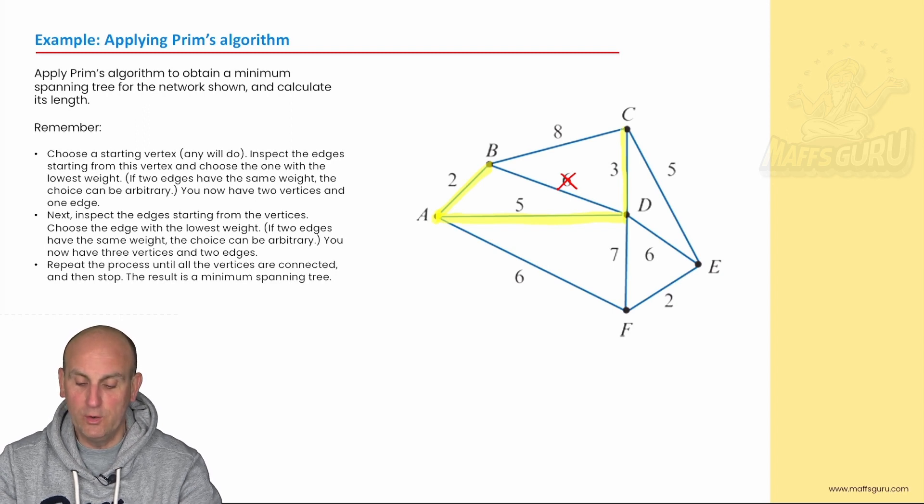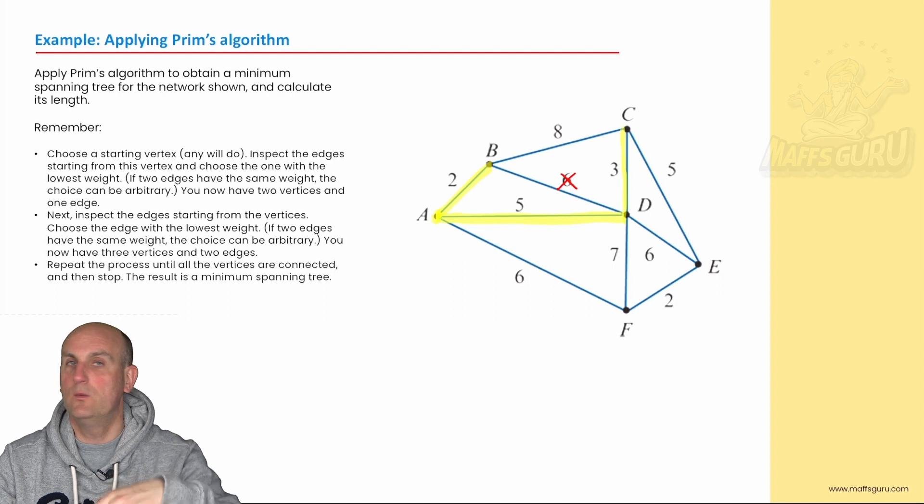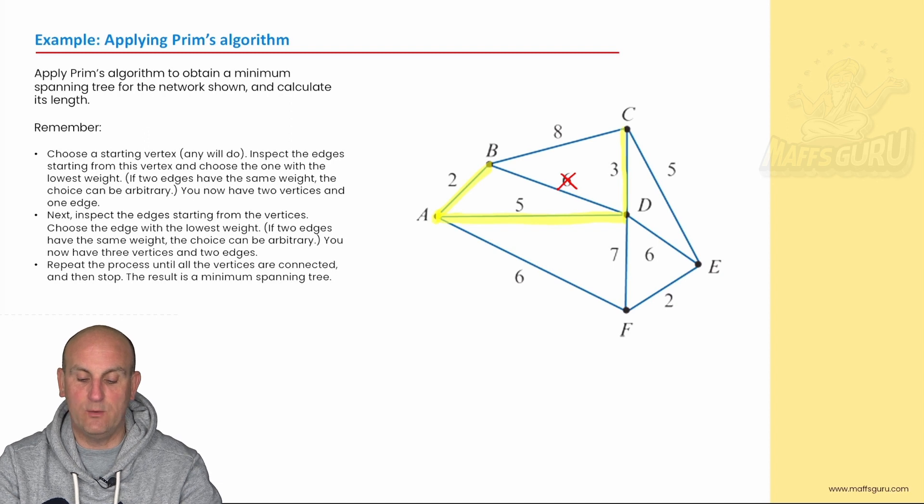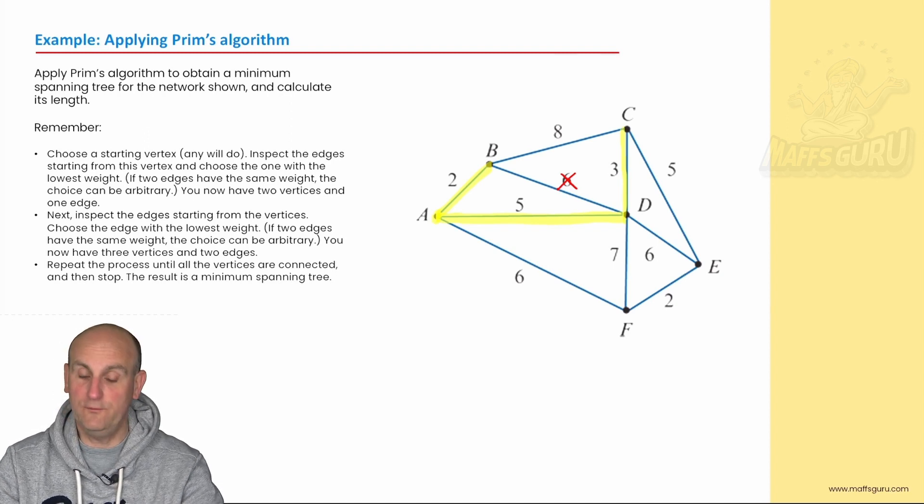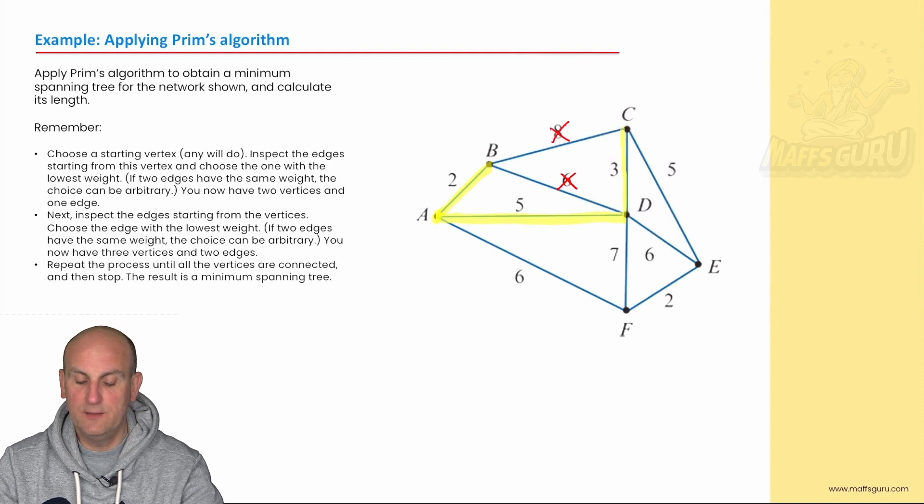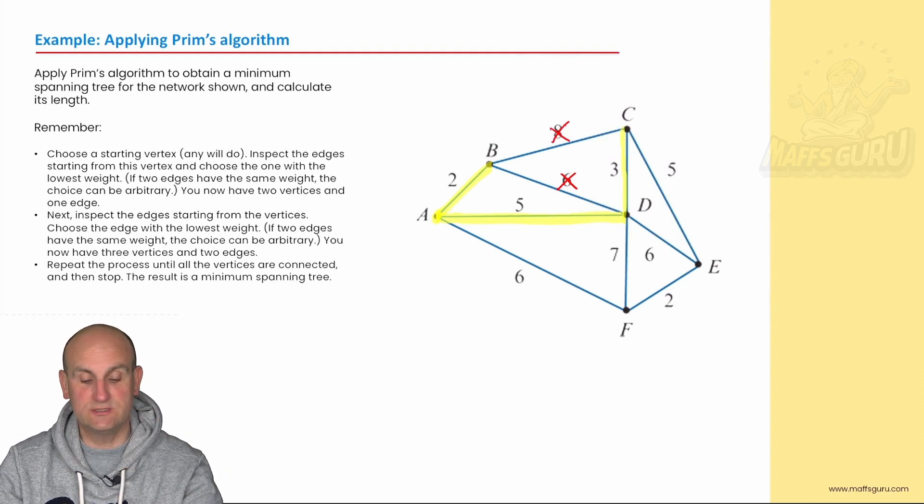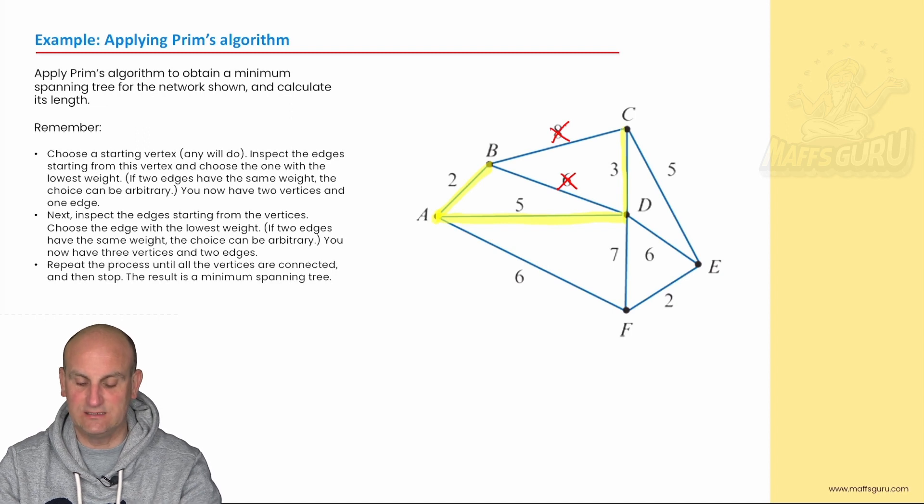A lot of people go, two, two, two, why didn't you choose two? Well, because it's not currently connected to my network. So, what do I do now? Well, I look at it and I go, right, is any number now not allowed? And I, hopefully, you will say, yes, I can't have the eight anymore. Why? Because if I connect B and C together, I'm going to have a cycle or a circuit. No good to me.